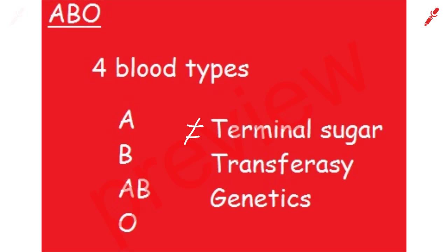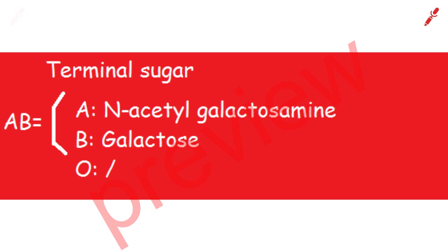So it is genetically determined whether you are A, B, AB or O, and it stays that for the rest of your life. Terminal sugar A is N-acetylgalactosamine, terminal sugar B is galactose and O doesn't have a terminal sugar. AB consists of terminal sugar A and B.